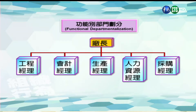第一个图是功能别的部门划分，是按照功能的方式来划分，比如说最上面是厂长，下面按照工程、会计、生产、人力资源、采购等不同的功能来划分组织。